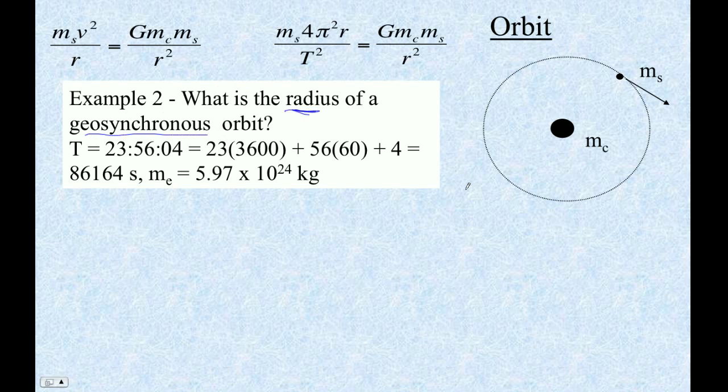So geosynchronous satellites are the ones that are above the equator, and they orbit in the direction the Earth rotates, and they have the same period as the Earth's period of rotation. And that makes them stay in the same spot in the sky. Of course, they're not sitting still. They're moving, and of course, so is the Earth.